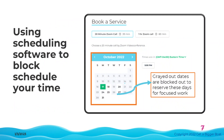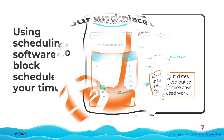One of the reasons to use scheduling software is to manage your block scheduling. You can limit your availability for meetings, so there are times you've set aside to get work done. In the example above, a 20-minute Zoom call can only be set up on Mondays, Tuesdays, and Thursdays. The other days are set aside for focused work.